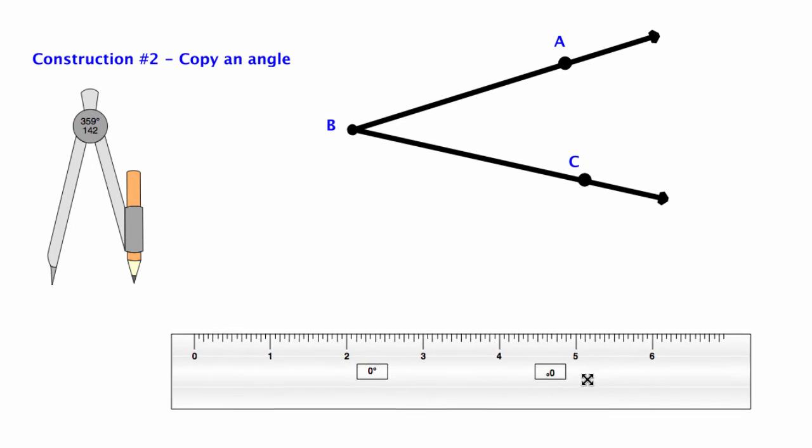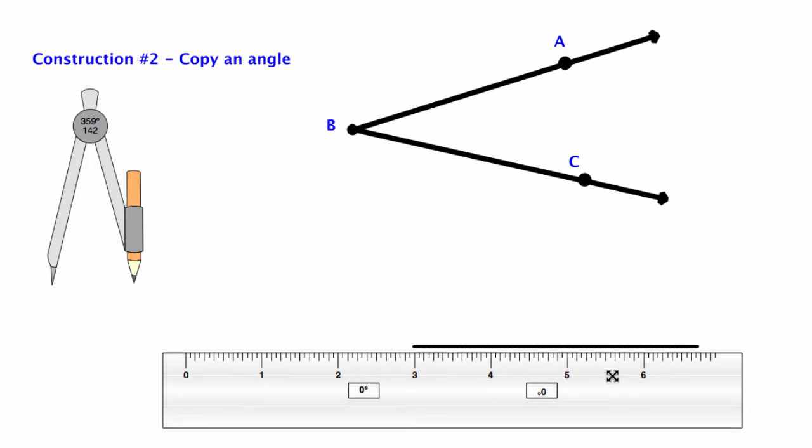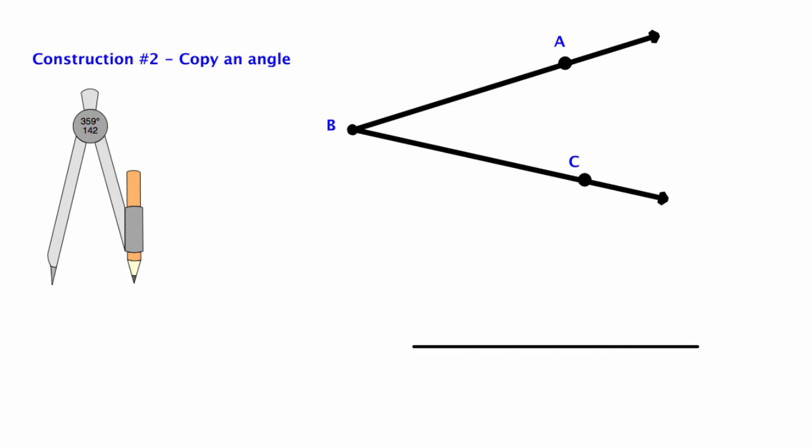Construction number two is copying an angle. This is one of the harder constructions to do well. You have to be very careful with how you move your compass and that you don't let it slip or open it up or close it more as you're moving things.